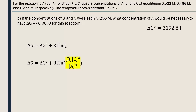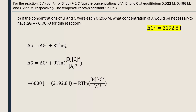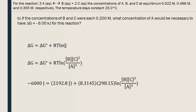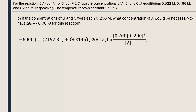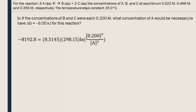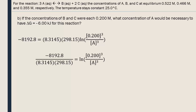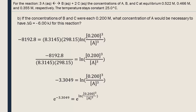For this equation, we need our standard and non-standard delta G's to be in joules, so we put negative 6 kilojoules in as negative 6,000 joules. We put in the standard delta G calculated in part A, then also the universal constant R, the temperature, and the given concentrations. We solve for A using algebra: first simplifying the concentrations, then subtracting the value of standard delta G from each side, then dividing by R and the temperature. By putting both sides of the equation as base E, we can eliminate the log function.